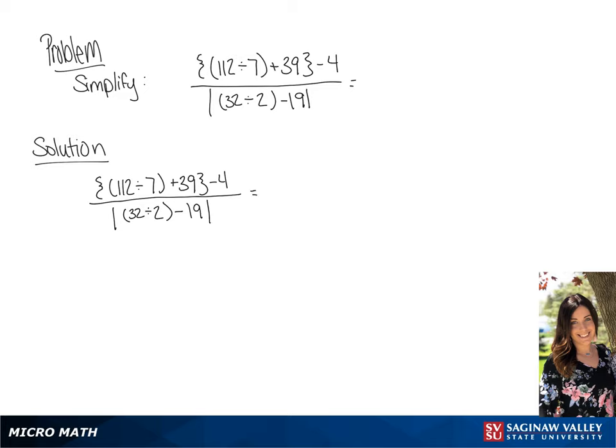So we have 112 divided by 7, which is 16. So in our parentheses we're going to have 16 plus 39, all minus 4. All of this is going to be over the absolute value of 16 minus 19.